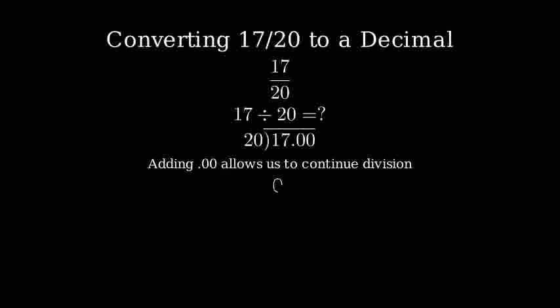Now, let's divide. 20 goes into 17 zero times with 17 remaining. So we put a decimal point in our answer and bring down our first zero.